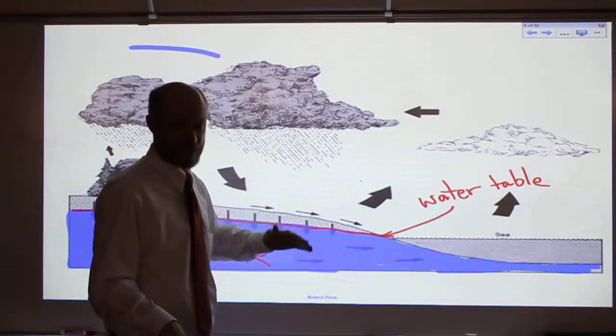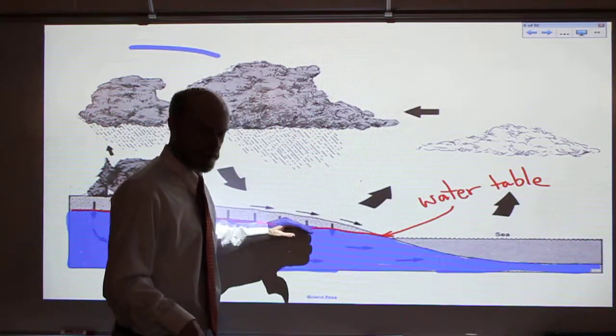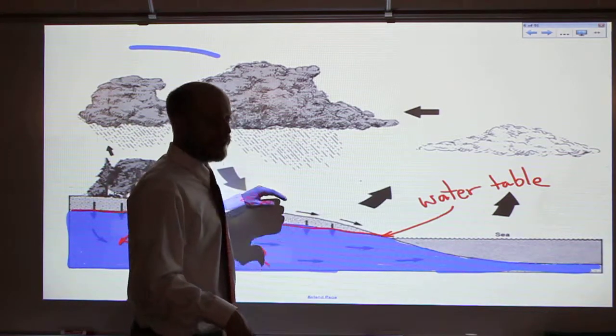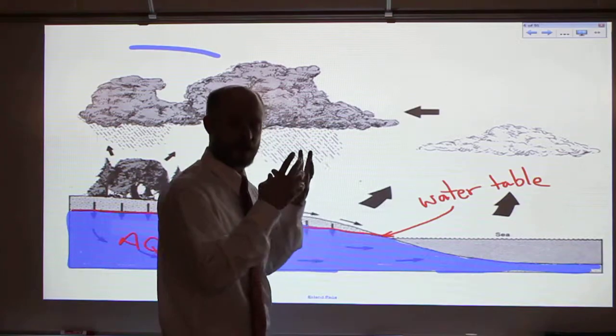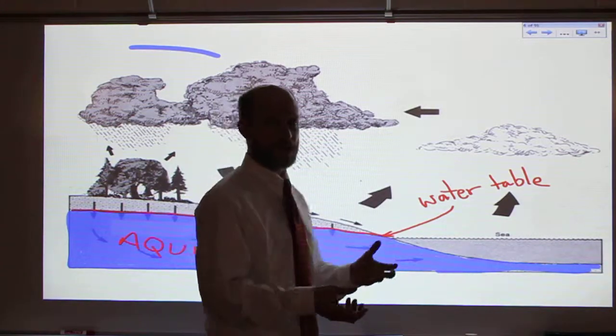And the water table will actually shift a bit. When we get a lot of rain, the water table rises a little bit. If we have a period of drought, the water table goes down. If you pump more water than is being added in through infiltration, the water table will go down.